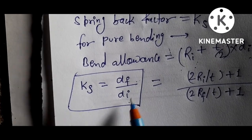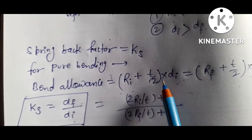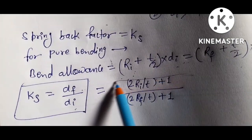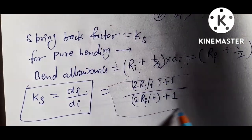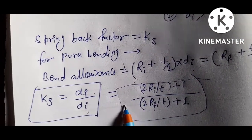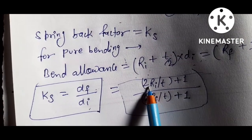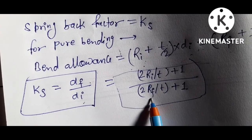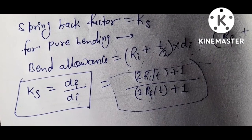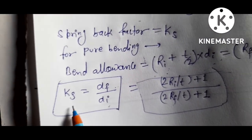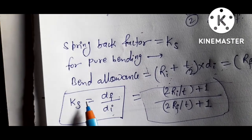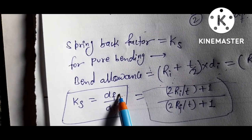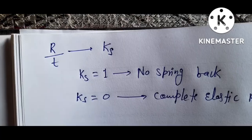The spring back factor Ks equals the final bend angle divided by the initial bend angle — that is, Ks = alpha-F / alpha-I — where RI is the initial bend radius and RF is the final bend radius.